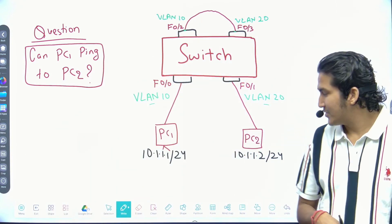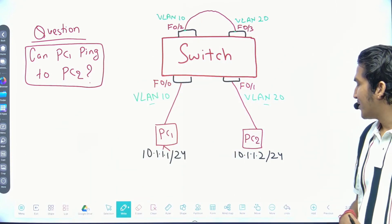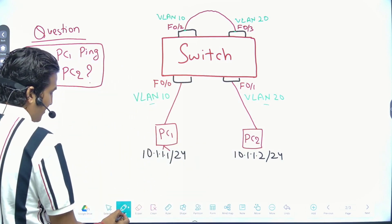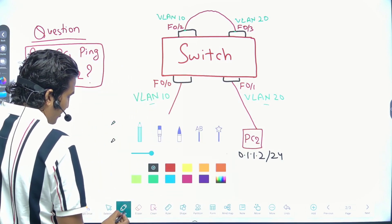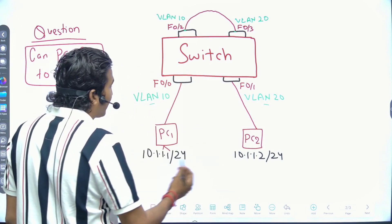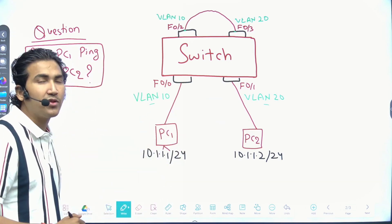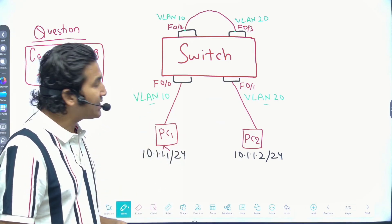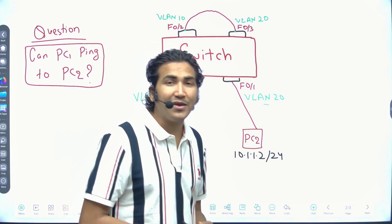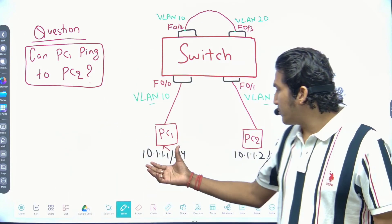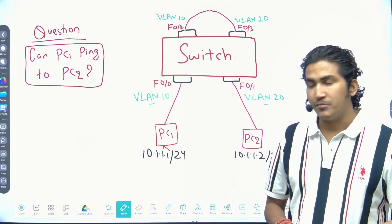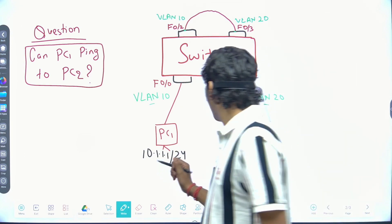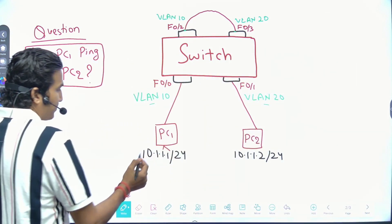Many of you are thinking that since both belong to different VLANs, how can they communicate — we need routing. But we don't need routing here, because both PCs belong to the same subnet. Both have IPs from the same subnet, so if I ping PC2 from PC1...